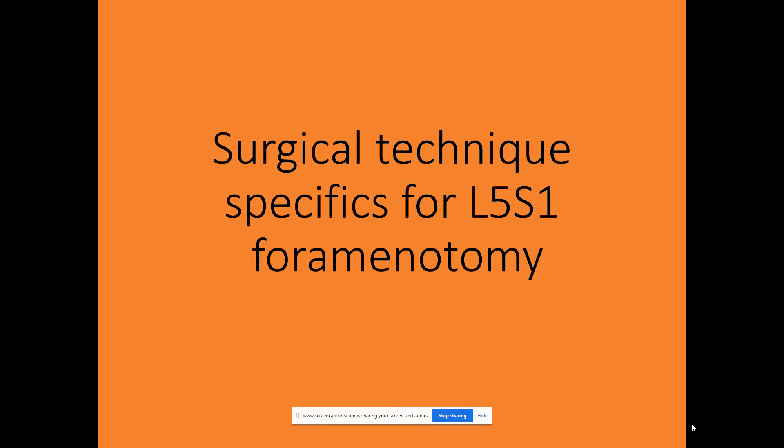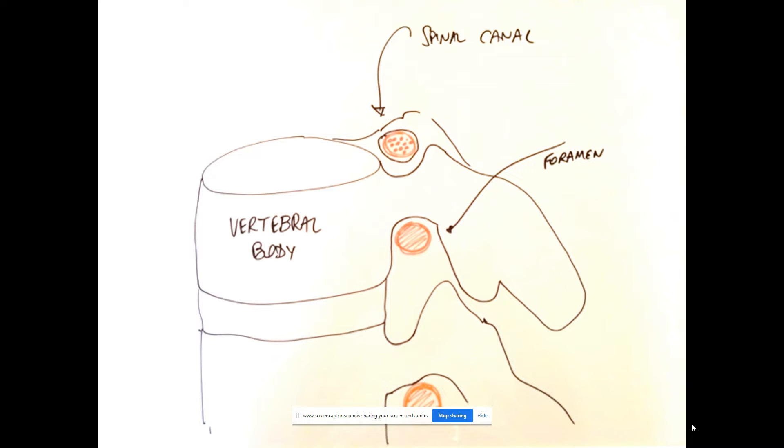This is a brief description of the surgical technique for an L5-S1 foraminotomy. Basically, the nerve root exits the foramen just inferior to the pedicle.